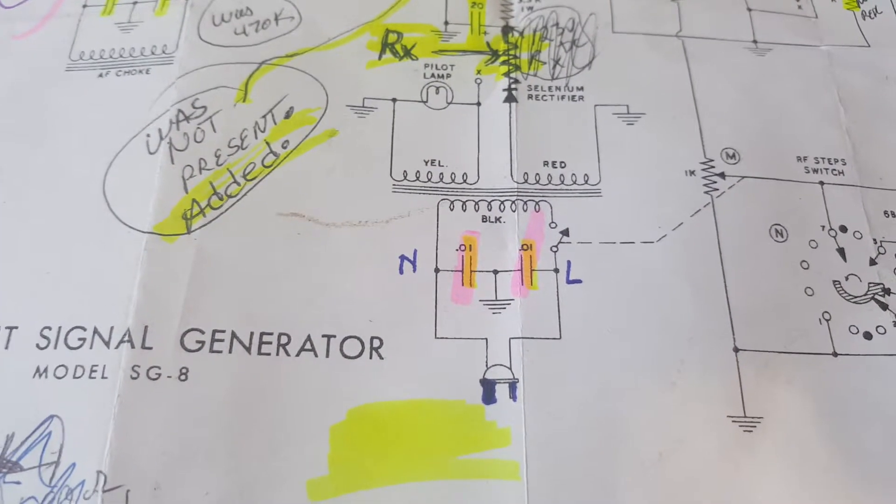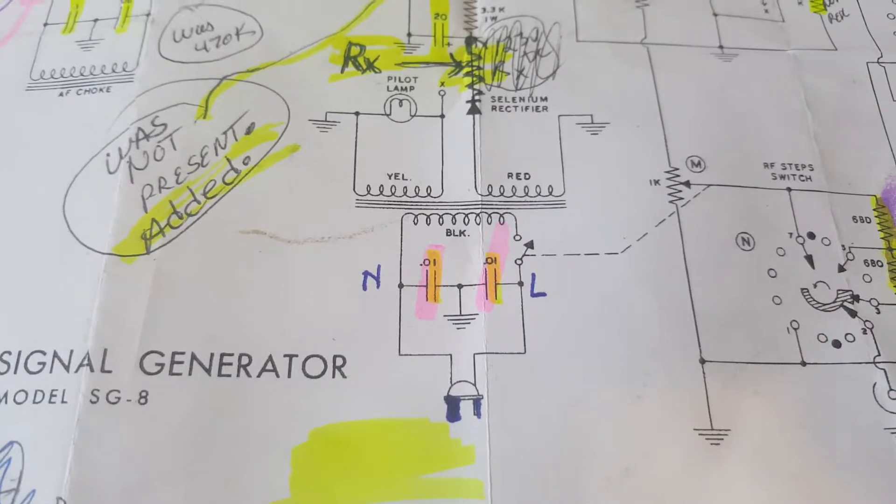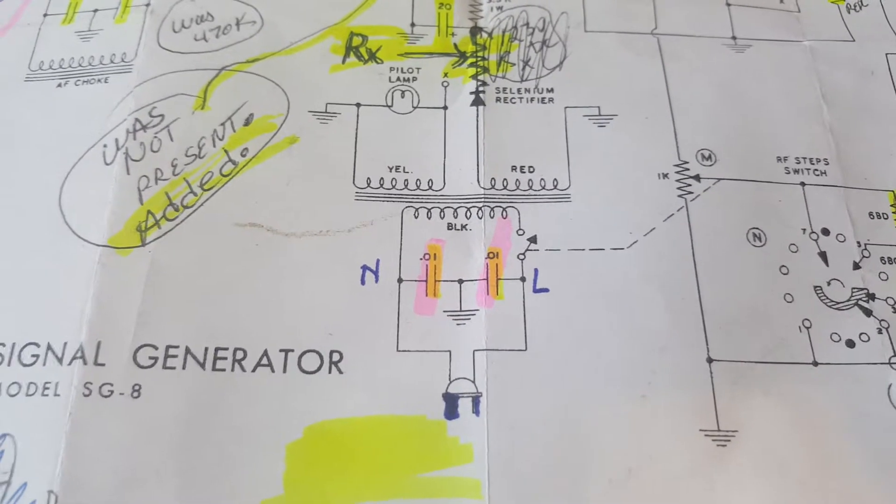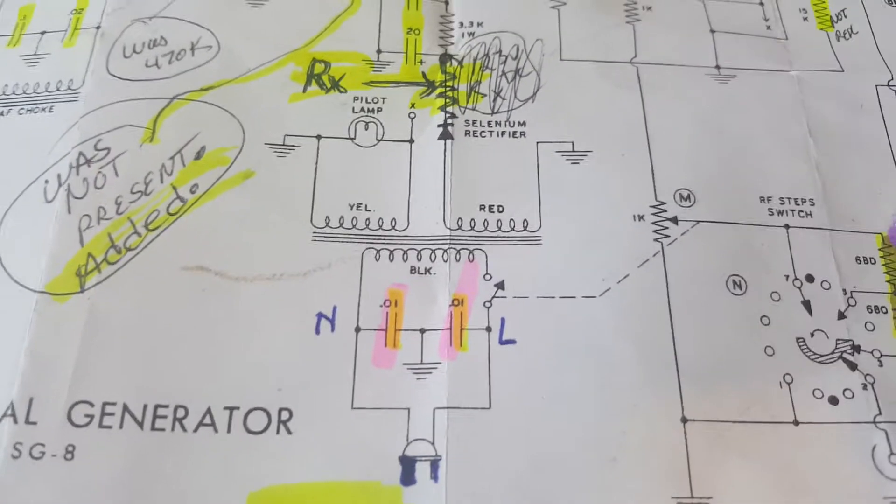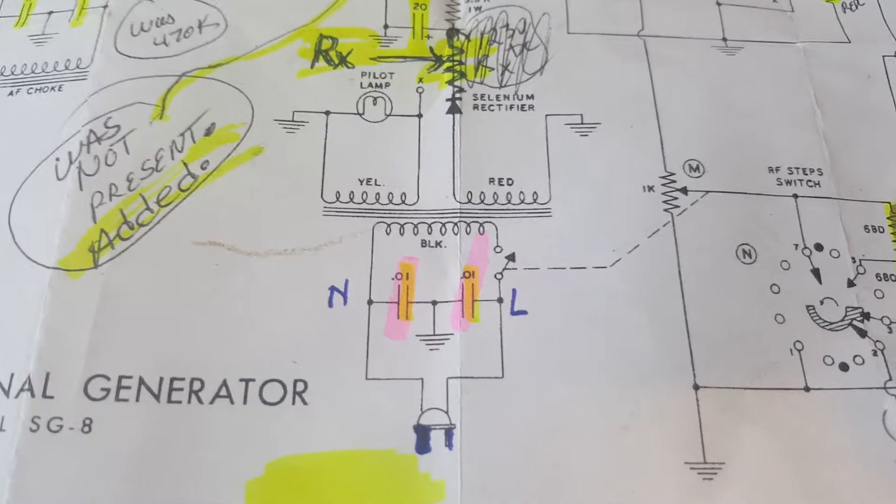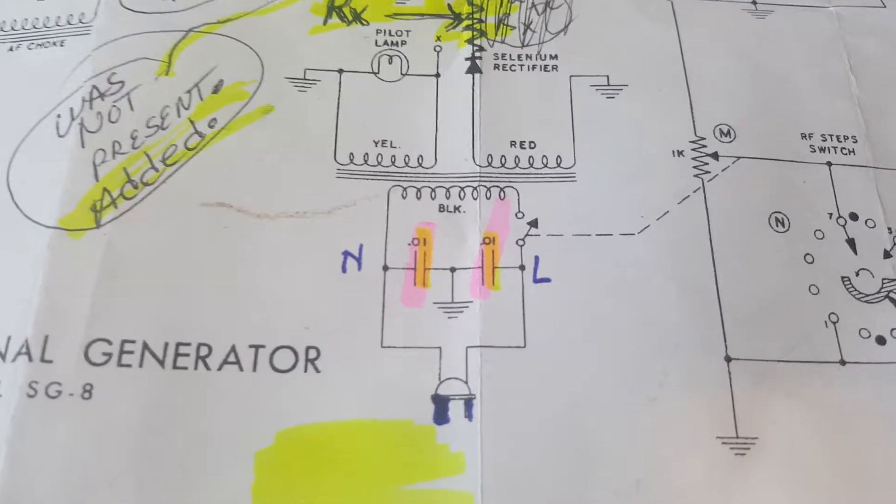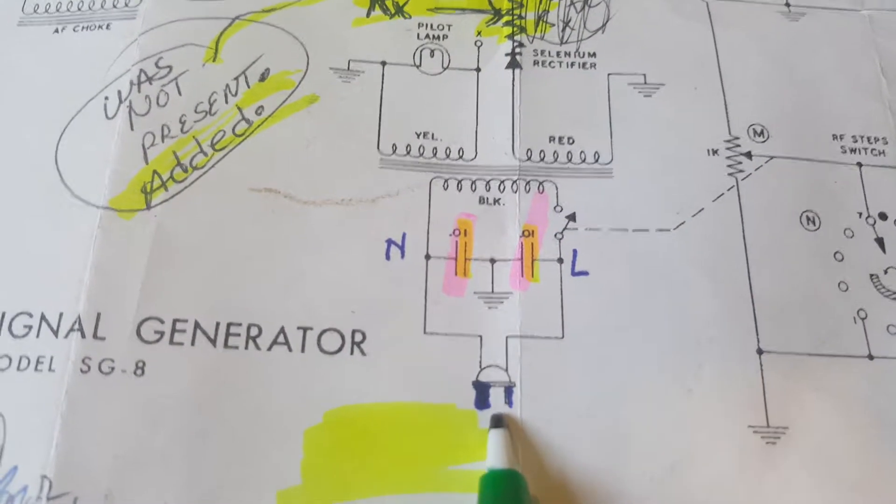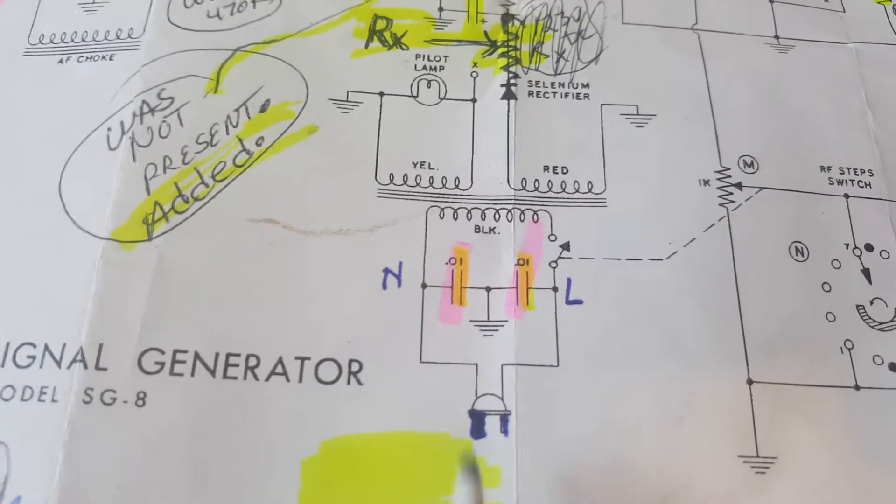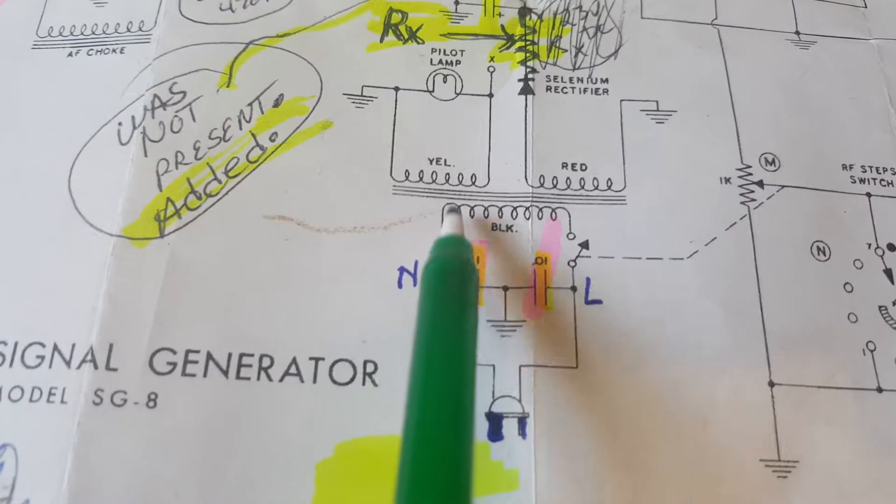As far as a modern power plug goes on vintage test equipment, this is the schematic for my Heathkit SG8 signal generator. You'll notice that we now have a polarized plug where the neutral is not switched.